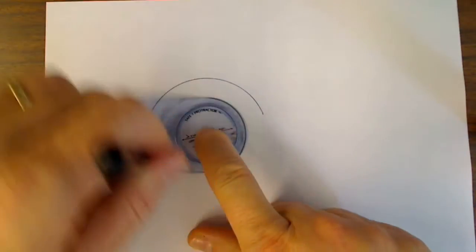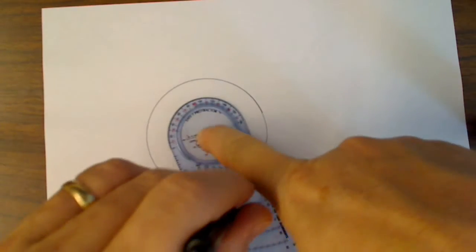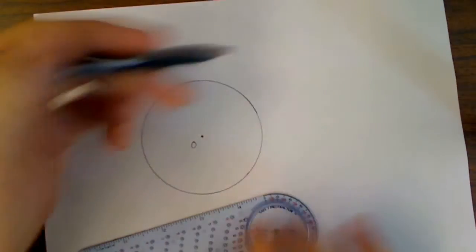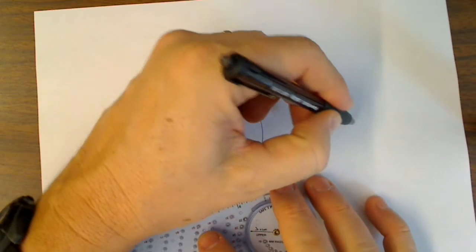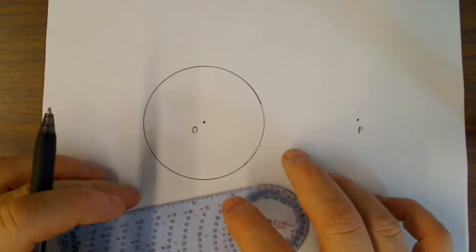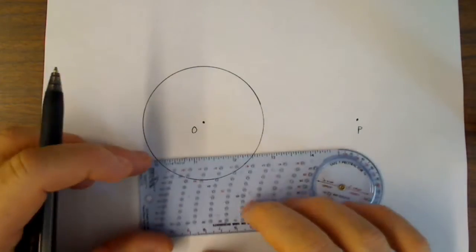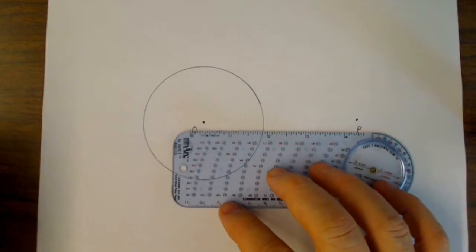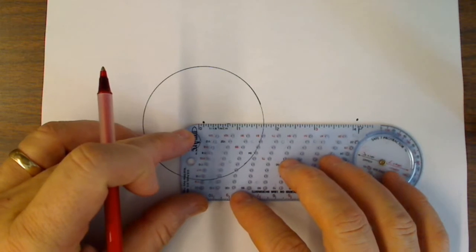I'll just make it 40 centimeters, 40 millimeters in radius. And then we've got this point somewhere outside the circle, we'll call it point P. The first step to do this construction is to draw the segment OP.